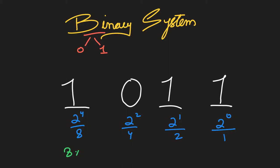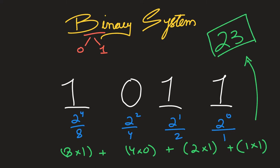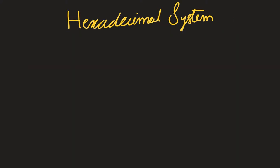So 8×1 + 4×0 + 2×1 + 1×1 gives us 11 in denary — wait, that gives us 11, so the number 1011 is 11 in denary. An easier way to remember the place values: start from 1 and keep multiplying by 2, giving 1, 2, 4, 8, 16, and so on. For an 8-bit binary number, the most significant bit has value 128.